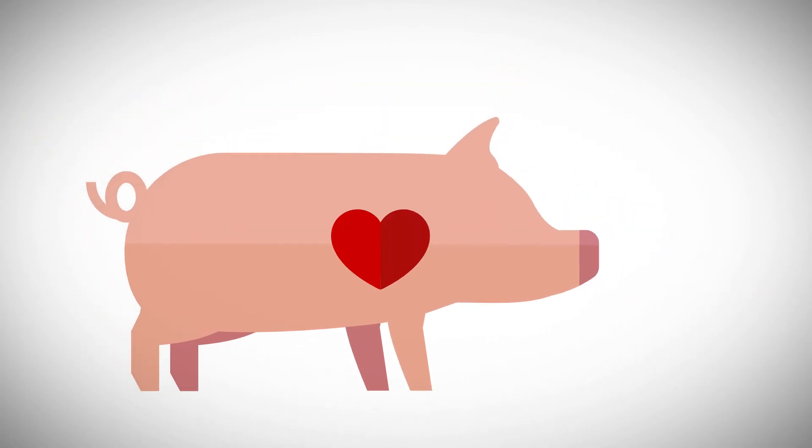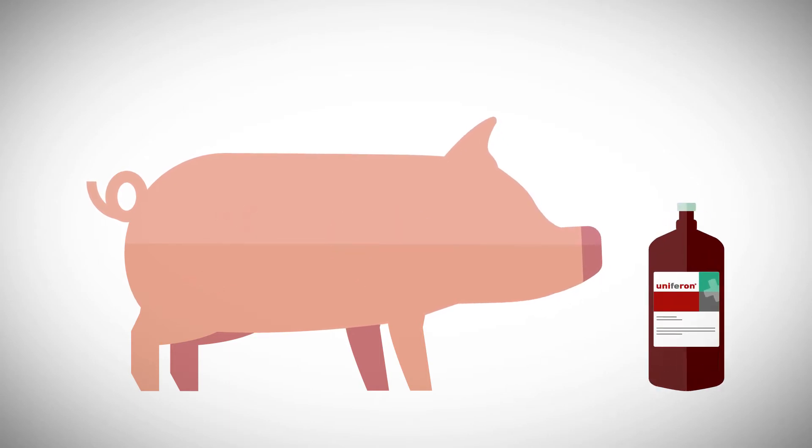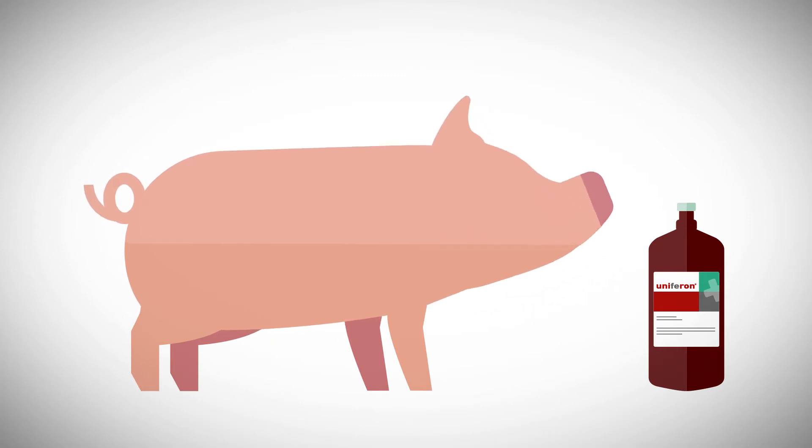To sustain its growth, the piglet needs blood to carry oxygen around the body. But the piglet is born with low iron levels and there is little iron in sow's milk. Therefore, the piglet needs iron supplementation as iron is the crucial element in the manufacturing of hemoglobin.